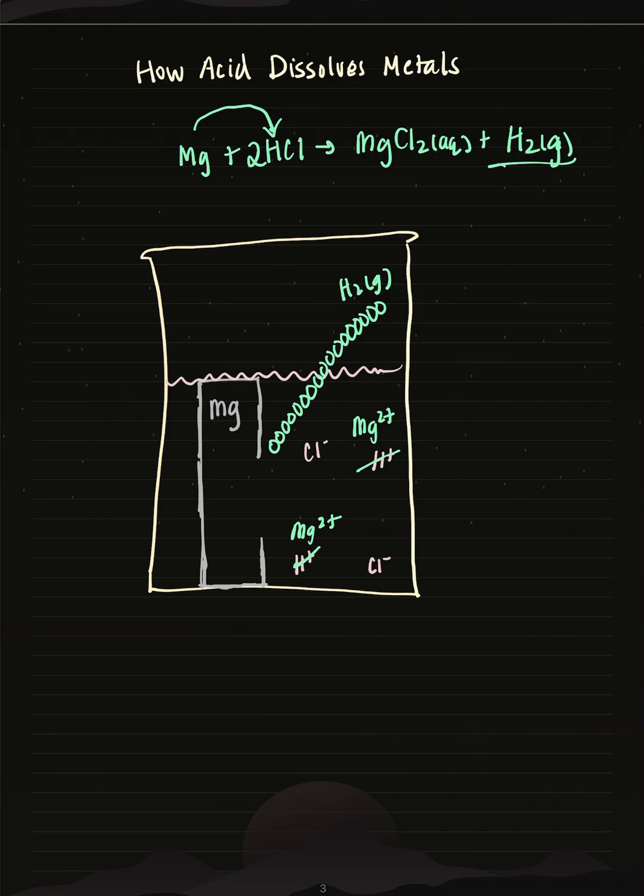So how do acids dissolve metals? It's through a single displacement reaction, which in this case is also a redox process.